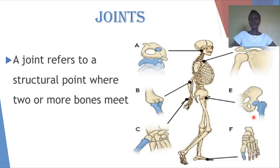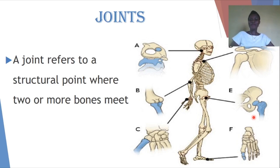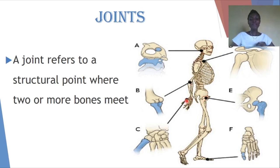So what is a joint? A joint refers to a structural point where two or more bones meet. You can find a joint in almost every part of your body — from your skull right down to your limbs. Where your head and skull connect to the vertebral column, you have a joint there. Where your limbs join to the pectoral girdle, you have another joint there as well.